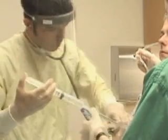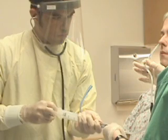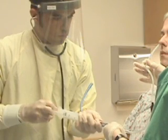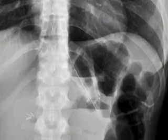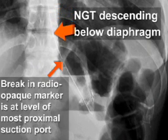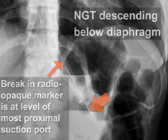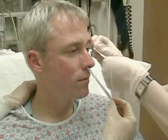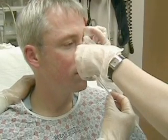It should be noted that auscultation and aspiration may occasionally provide false positive results. Therefore, radiographic confirmation of tube placement by visualizing the NG tube's descent below the diaphragm should be obtained prior to infusion of any substance, such as activated charcoal or oral contrast media. The tube should be secured to the patient prior to transport to the radiology suite.